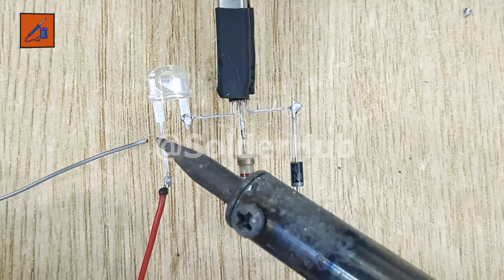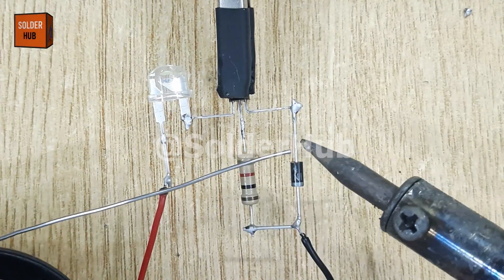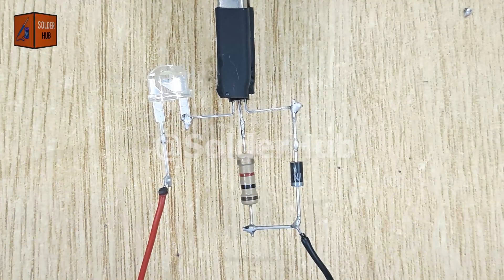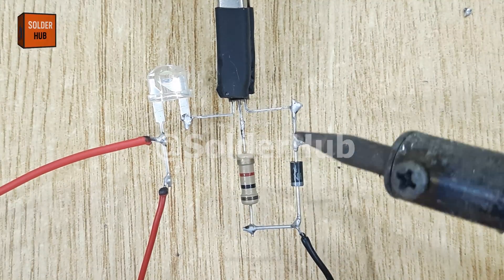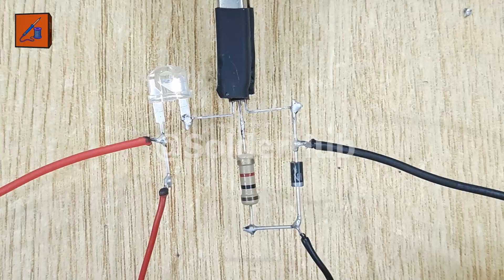Finally, it's time to bring in the power supply. I'll connect a 3.7V battery to power up the circuit. The positive wire of the battery will go to the positive pin of the LED, while the negative wire connects to the emitter pin of the transistor.